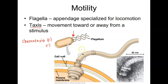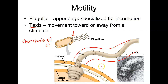Prokaryotic flagella are about one-tenth the width of eukaryotic flagella, and also prokaryotic flagella are not covered by the plasma membrane. In eukaryotic cells that have flagella, the plasma membrane actually covers the entire flagella. Eukaryotic cells, prokaryotic cells, and archaea all have flagella, and they are all very distinct from one another, indicating that all three evolved independently.